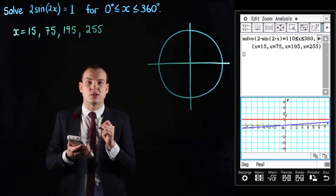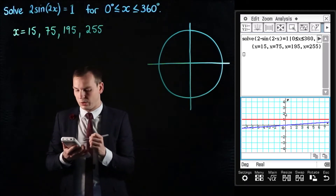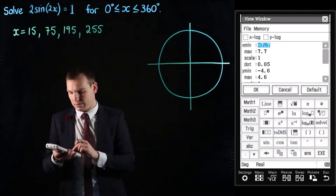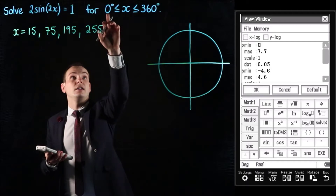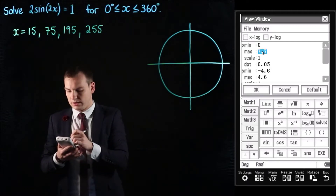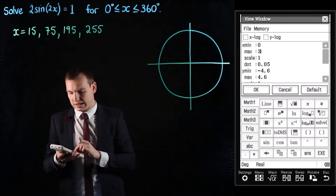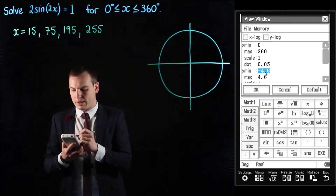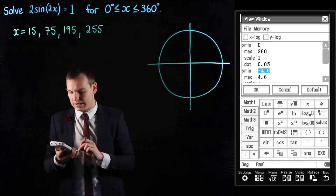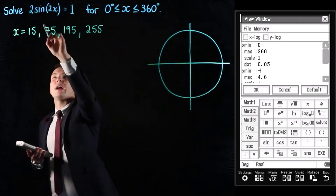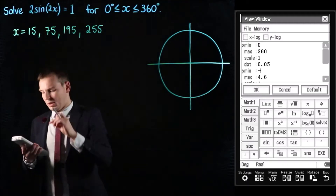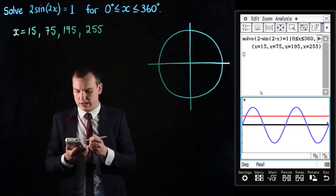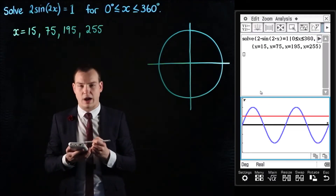Now what I need to do is change the view screen so I get a better look at what's going on. Using the four arrows at the top we're going to change it so our x minimum is 0 and the maximum x value is 360. For the y min and y max, looking at the amplitude which is 2, I'm going to go from negative 3 to 3. Hitting OK should give us a fairly good view of this graph.